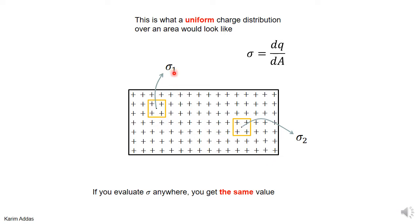The procedure to get sigma at any point: you make an element of area, you see how much charge there is inside this area — delta Q — you divide delta Q by the area, but then you shrink the size of the area until it becomes a point. And in that limit, that will give you the sigma at that particular point.